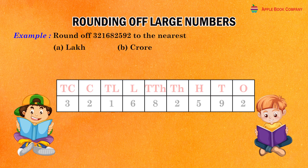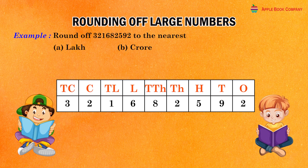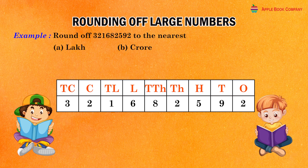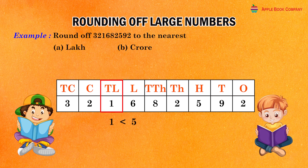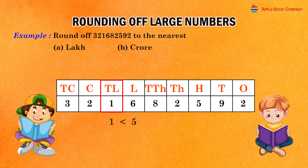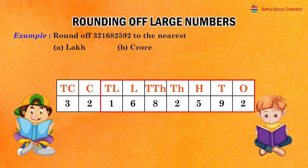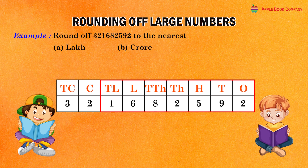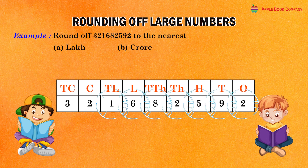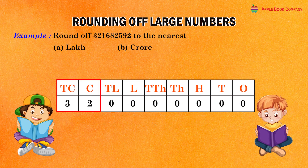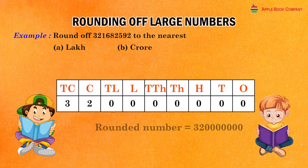The number 32 crores, 16 lakhs, 82,592 is to be rounded to the nearest crore. Here, the digit at the ten lakhs place is 1 which is less than 5. So, replace each one of the digits at lakhs, ten thousands, thousands, hundreds, tens and ones places by zero and keep the other digits as they are. Rounded number: 32 crores.